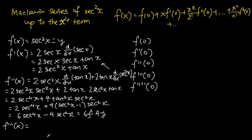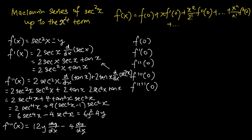We use implicit differentiation. When we differentiate 6y squared with respect to x we get 12y times dy/dx. Subtracting away 4 times dy/dx gives us f triple prime x equals 12y dy/dx minus 4 dy/dx.